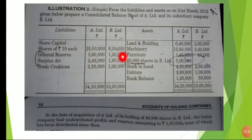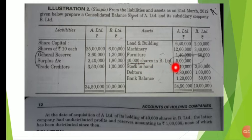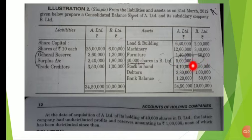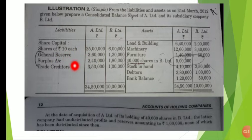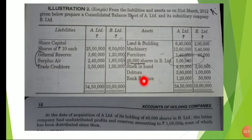This is our trick: if you have any holding or subsidiary question, check the asset side. If A company has an investment in B company on its asset side, then A is the holding company and B is the subsidiary company. The balance sheet will show share capital, reserves, creditors, land, building, machinery, investment, stock, and debtors.